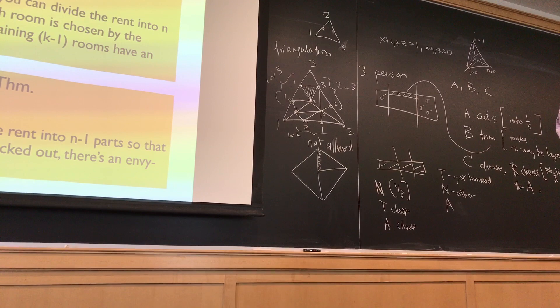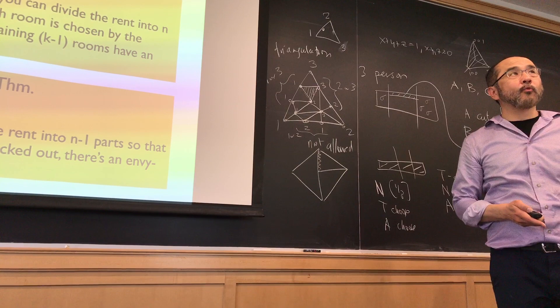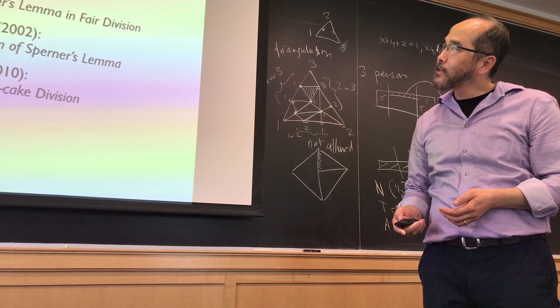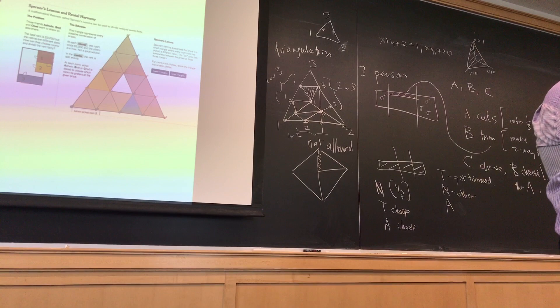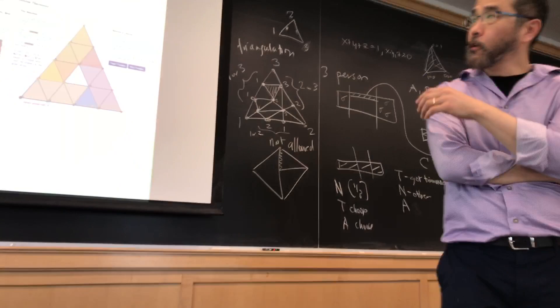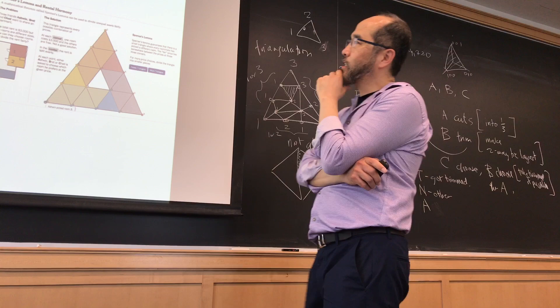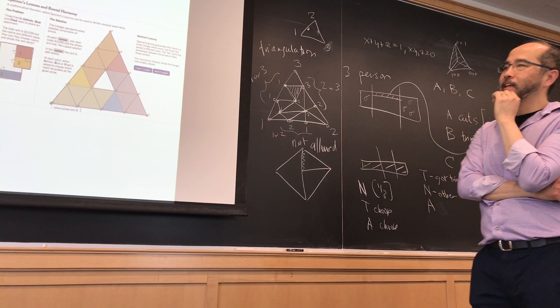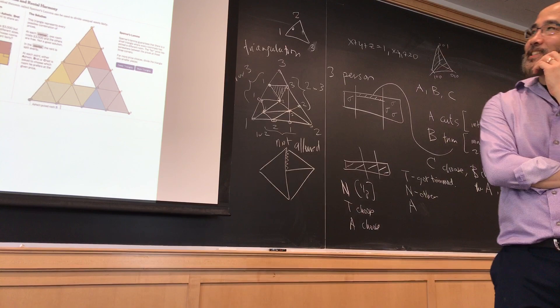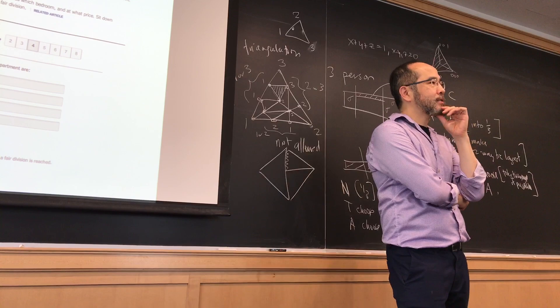If you actually want to see how the algorithm works, a New York Times reporter called me a few years ago about the rent-division problem. A Harvey Mudd student had coded up an applet, and the reporter said they'd like to redo it as a New York Times interactive. It took about a year, but it's online — just search 'divide your rent fairly' in the New York Times. You can see Sperner's Lemma in practice. Thank you very much.